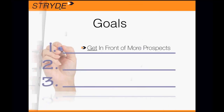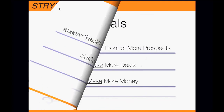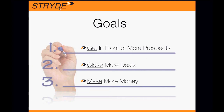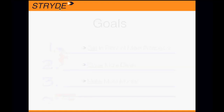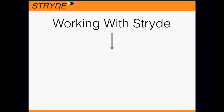When we talk about differentiation and facilitating the goals associated with all business consultants, the key naturally is to get in front of more prospects. Through differentiation, we get in front of more people than ever before. But that's not enough — the goal is not just to get in front of them but to close them, and in closing deals we seek to make more money. What Stride facilitates is really the opportunity to sell more than ever before.